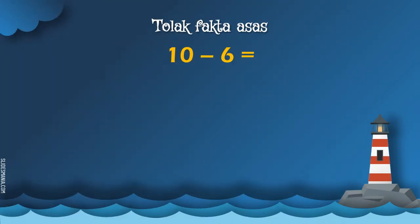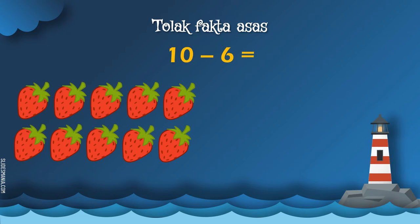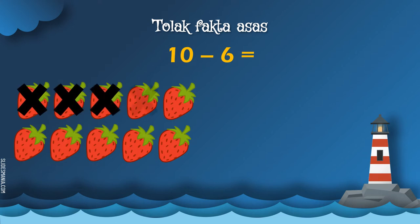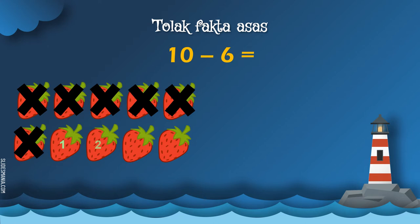Seterusnya, kita tengok 10 tolak 6 sama dengan... Cikgu ada 10 biji stroberi. Sekarang, berapa yang perlu Cikgu tolakkan? Tolakkan dengan 6. Jadi, 6 stroberi yang Cikgu akan buang — 1, 2, 3, 4, 5, 6. Berapa lagi stroberi yang tinggal? 1, 2, 3, 4. Jadi, 4 biji stroberi.